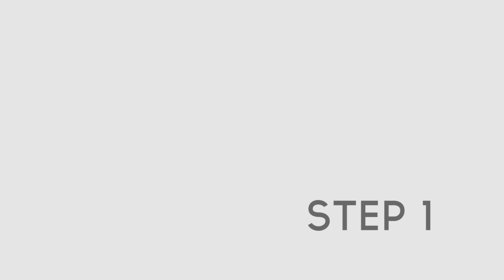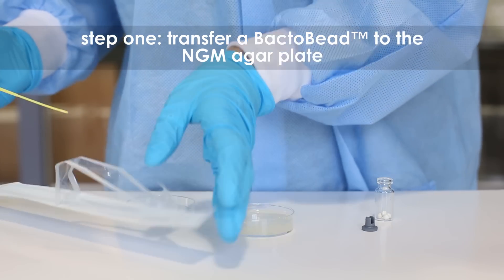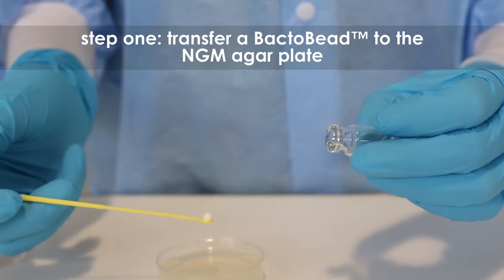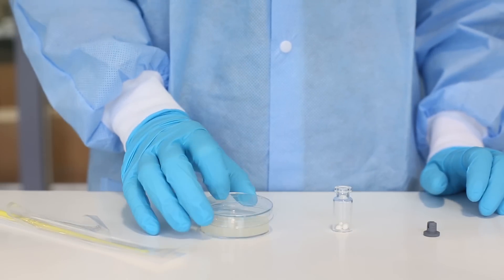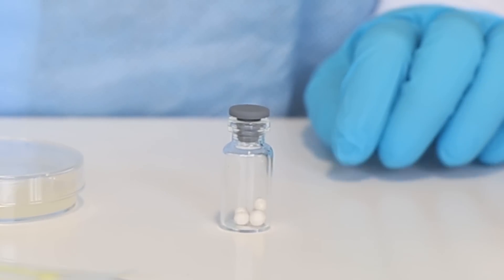Step 1: Practicing aseptic technique, use a sterile inoculating loop to transfer a single Bacto Bead from the vial to an NGM agar plate. Replace the lid of the Petri plate. Immediately cap the Bacto Bead vial to limit exposure to moisture from the air.